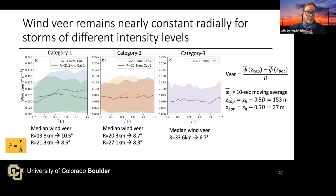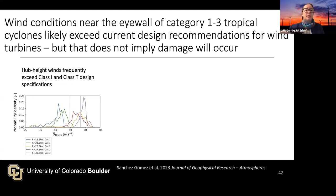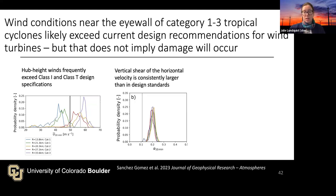To summarize the LES findings: although we show many exceedances of IEC standards, this does not necessarily imply damage will occur — there are safety mechanisms in turbines not addressed in our simulations. We are simulating the metocean conditions that could lead to loads, not simulating damage directly. Key findings are that hub height winds can exceed specifications, vertical shear is larger than in the standards, and turbulence variability can be underestimated in design criteria.